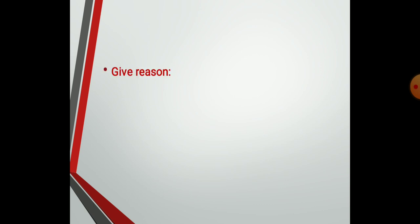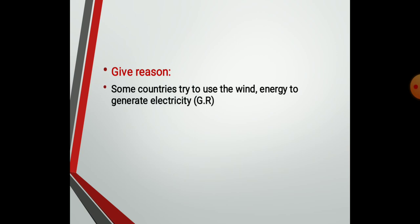The forms of energy are: light energy, sound energy, electric energy, chemical energy, heat energy, nuclear energy, and mechanical energy. Give reason: some countries try to use wind energy to generate electricity, because wind is a cheap and clean resource of energy that doesn't pollute the environment.